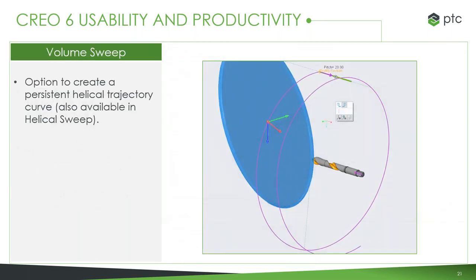The volume sweep also has some new uses — this is something we were very excited to release in Creo 5.0 and have kept building upon. This is where we take a solid model and take it through a helical sweep to create things like cutting and grinding tools. What we've added is the ability to keep that helical toolpath. We've always displayed it when using the tool, but now we're able to actually retain that path, and this is available for normal helical sweeps as well.